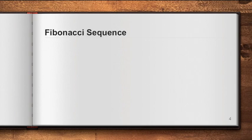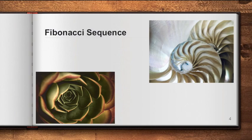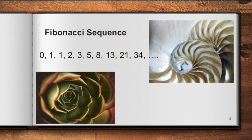Another common example of a sequence is what we call the Fibonacci sequence. This sequence begins with zero and then followed by one, one, two, three, five, eight, thirteen, twenty-one, and thirty-four.